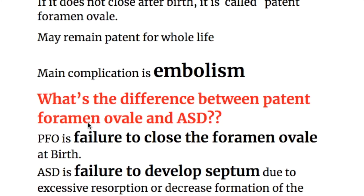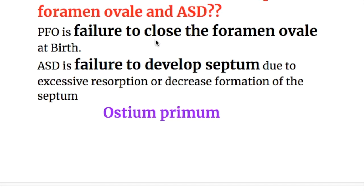The difference between patent foramen ovale and atrial septal defect: patent foramen ovale is failure to close the foramen ovale at birth, whereas atrial septal defect is failure to develop the inter-atrial septum due to excessive resorption or decreased formation of the septum.